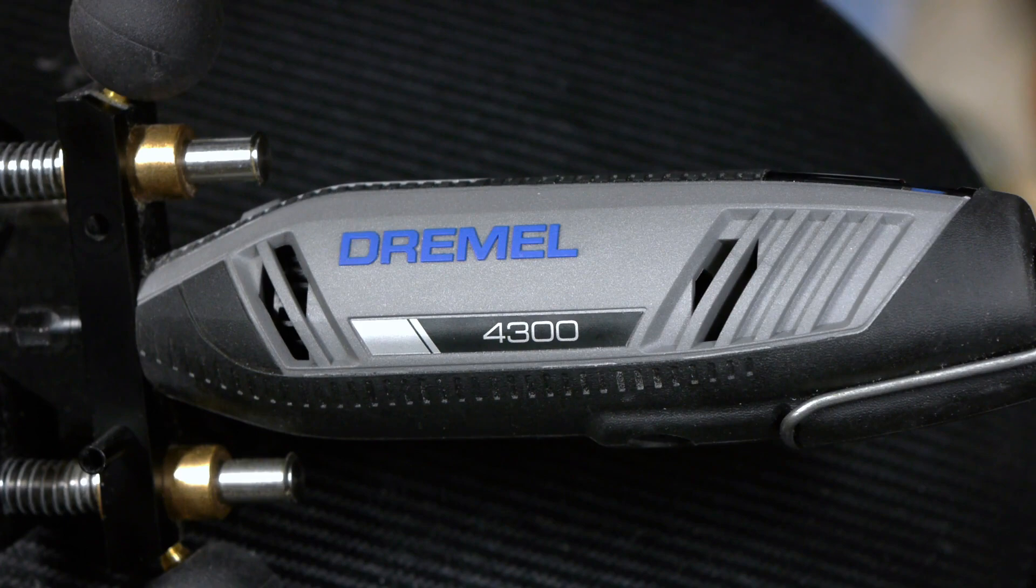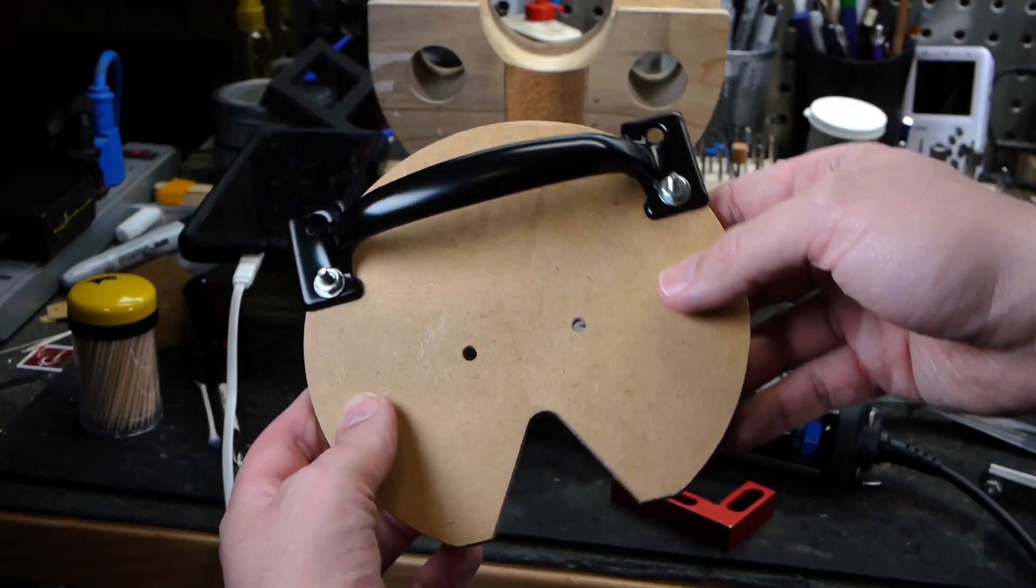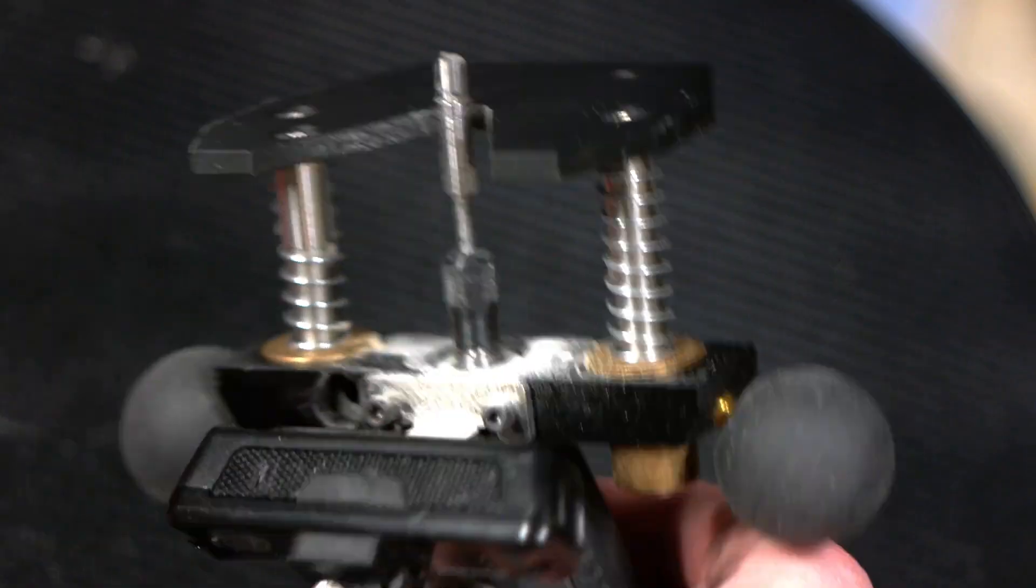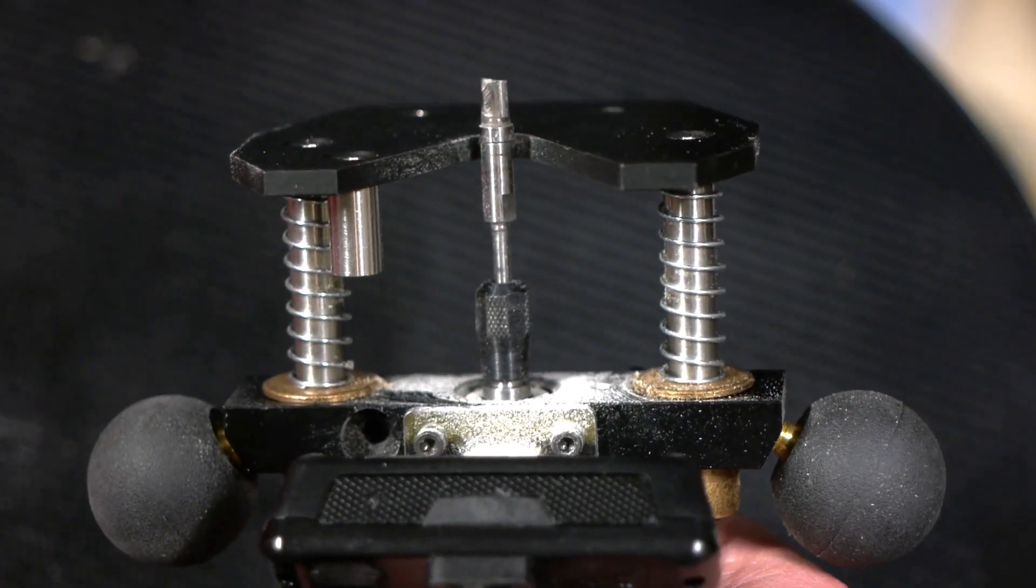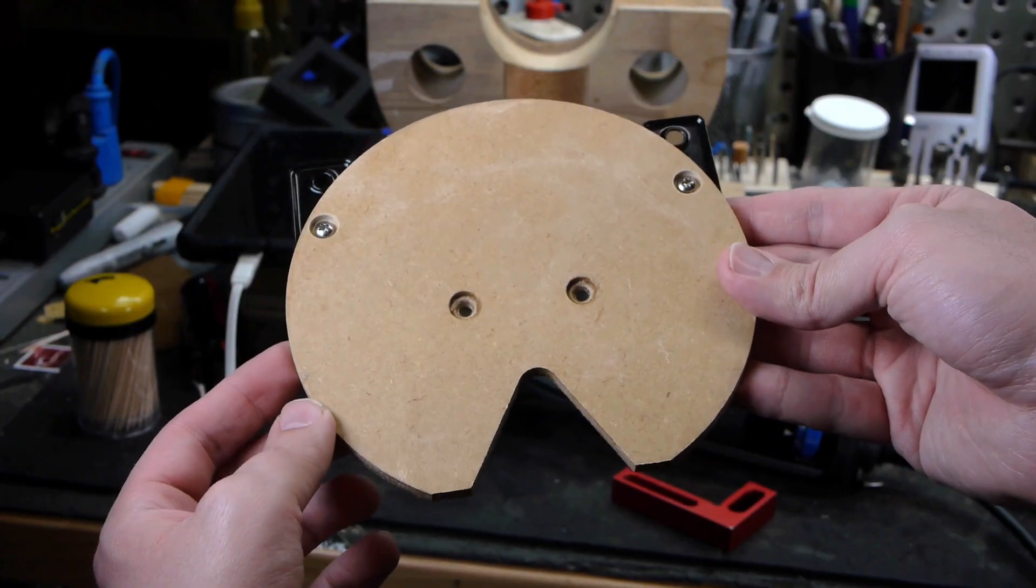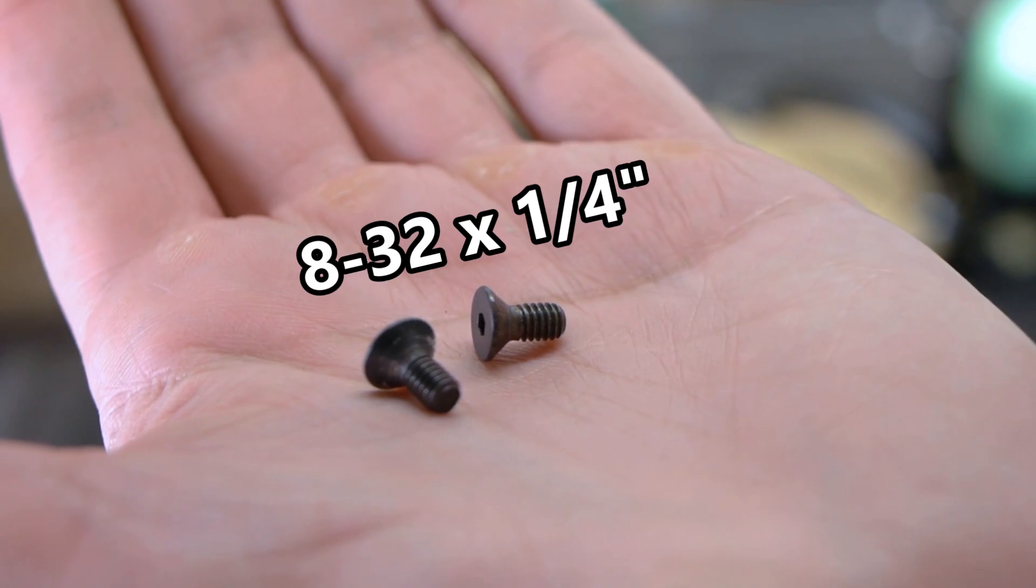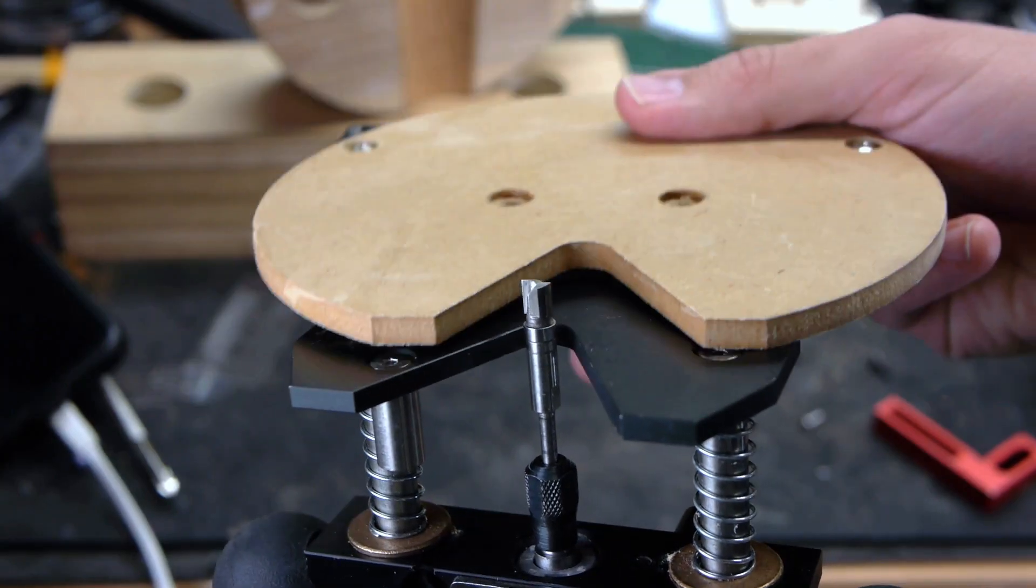Ideally we'd use a Dremel, and that's exactly why I designed this router base plate to attach to the StewMac plunge router base, which is made for a Dremel. My neck pocket routing base plate uses two 8-32 by quarter inch machine screws to attach to the plunge router base.